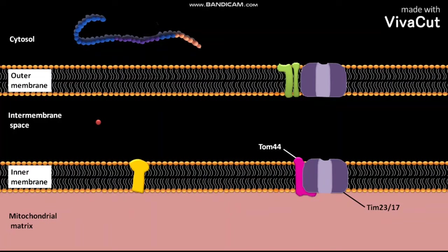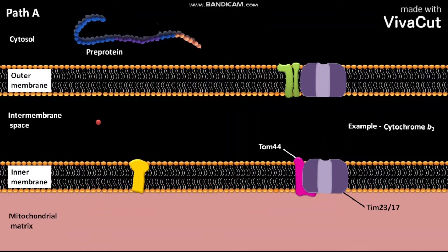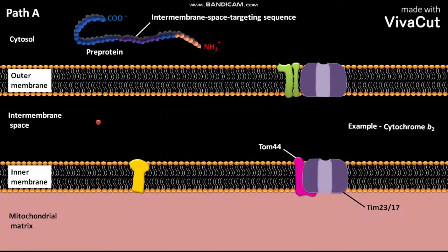First, we will discuss Path A. Through Path A, proteins like cytochrome B2, present in the form of a pre-protein, are delivered to the intermembrane space. This pre-protein has a carboxy-terminal domain and an amino-terminal domain, and it has two different N-terminal targeting sequences: one is an intermembrane space targeting sequence, which is a hydrophobic segment, and the other is a matrix targeting sequence.